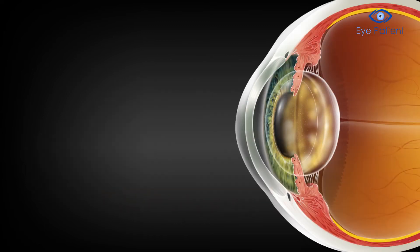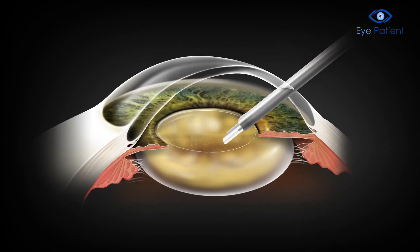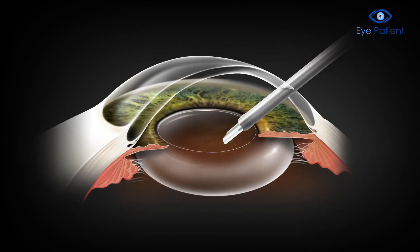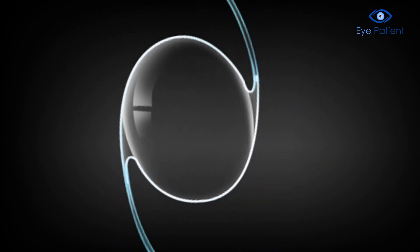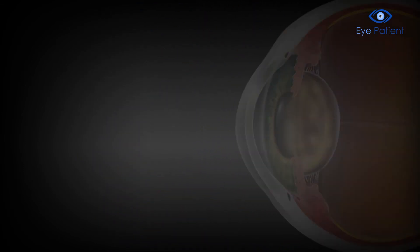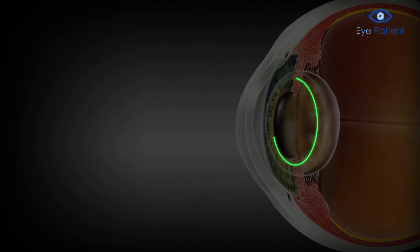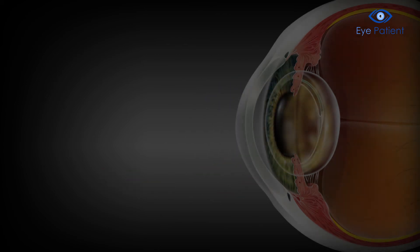The surgeon takes great care to create a window in the capsule's front to enable easier cataract removal and lens implantation. For monofocal lenses, an opening of about 5.5 mm in diameter is ideal to prevent the lens from shifting.